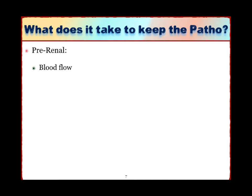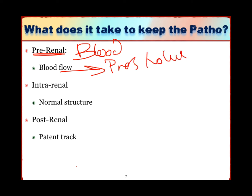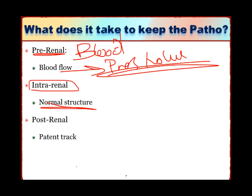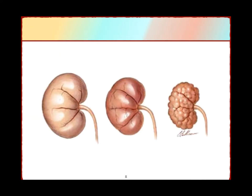What does it take to maintain normal kidney function? There are factors we call pre-renal — meaning before the kidneys — which is mainly the blood. There must be normal blood flow and perfusion at normal pressure and volume. Any change in volume or pressure will decrease filtration. We also have intra-renal factors: the internal structure must be normal, with no ischemia and no toxic materials. And post-renal: we need a patent urinary tract with no obstruction or tumors blocking urine flow. These three groups of factors maintain kidney function.